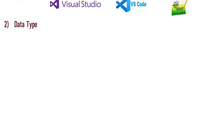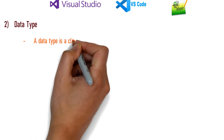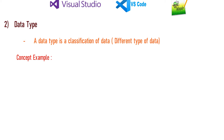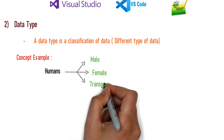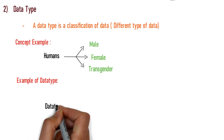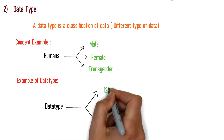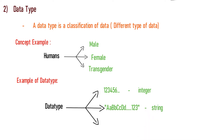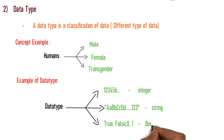Next is Data Type. One type of data type — if you compare it in real time, we are humans and we can divide ourselves into categories: Boys, Girls, Transgender. Similarly, we can divide data into different types. For example: Numbers or Integer, String which is letters or alphabet, and True or False which is Boolean — zeroes and ones.